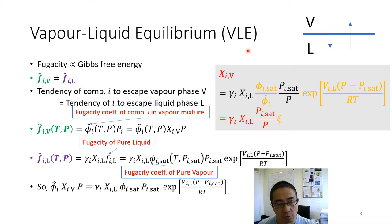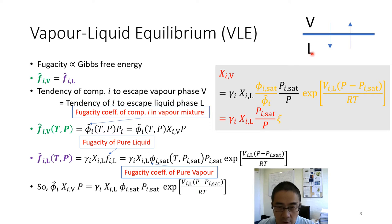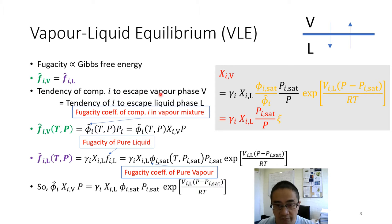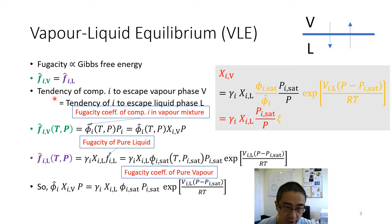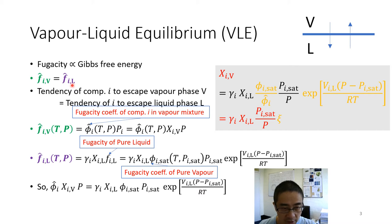Most evaporation models are based on the vapor-liquid equilibrium (VLE) concept: at the interface between vapor mixture and liquid mixture, to reach thermodynamic equilibrium between the two phases, the tendency of component i to escape the vapor phase should equal the tendency of component i to escape the liquid phase. This tendency is quantified by fugacity, which is proportional to Gibbs free energy.